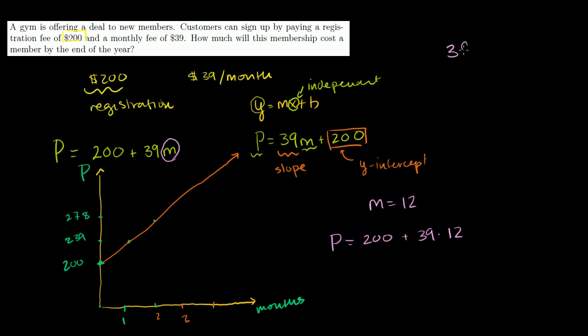And what's 39 times 12? 39 times 12. 2 times 9 is 18. 2 times 3 is 6, plus 1 is 70. I have a 0. 1 times 9 is 9. 1 times 3 is 3. So we have 8, 7 plus 9 is 16, 1 plus 3 is 4. So this right here, so the price of our membership is 200 plus 39 times 12, which is $468. So it's equal to $668 at the end of our year.